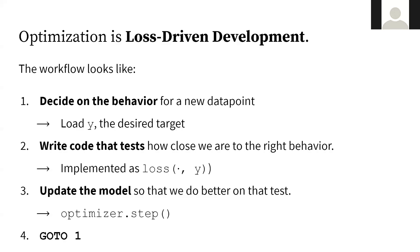What does it look like to think of machine learning that way? We'd be using loss-driven development instead of test-driven development. First, we decide on the behavior for a new data point — loading the desired target, especially in supervised learning. Then we write code that tests how close we are to the right behavior, which is exactly what our loss function is when we think of it as a function of the parameters. Then we update the model to do better on that test using gradient descent or Adam or whatever optimizer we're using. And then we repeat this over and over again for each new batch of data points.